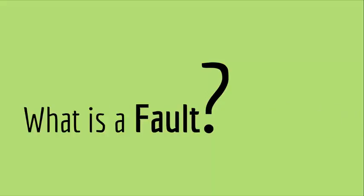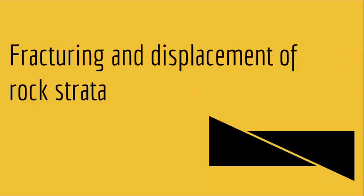So what is a fault? A fault is fracturing and displacement of rock strata. If you have a rock strata and it fractures, and the broken parts are displaced or moved, then that is called a fault. Just like you see here — the rock strata was fractured, this one moved up and this one moved down, so this is a fault.